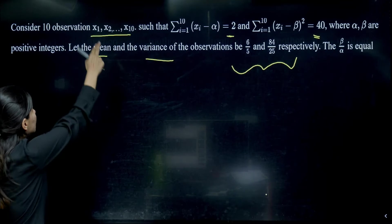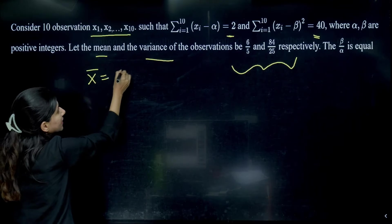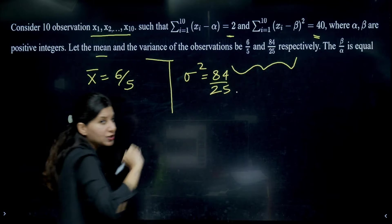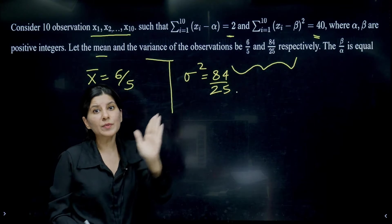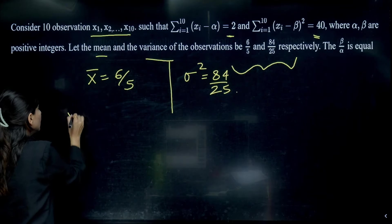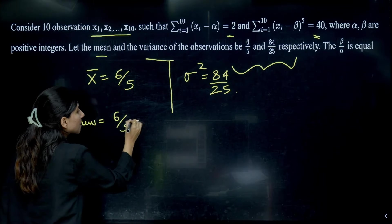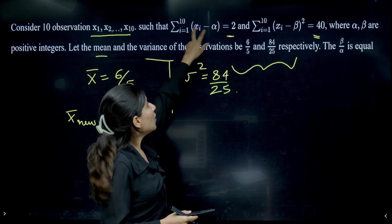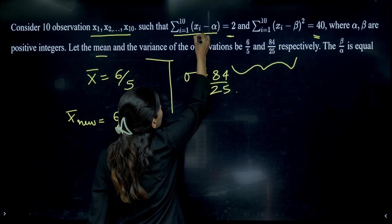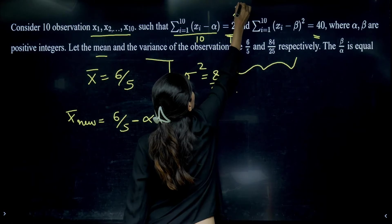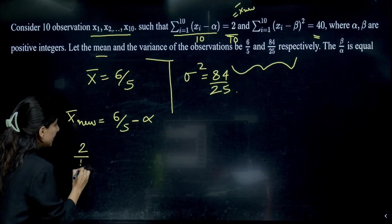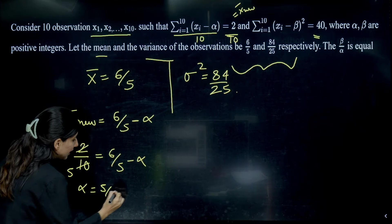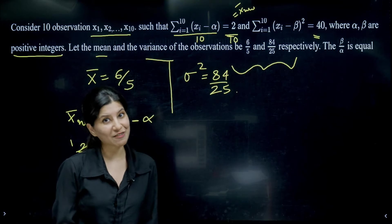Now applying this: 10 observations, original mean x-bar = 6/5, original variance = 84/25. They subtract alpha from each observation. The new mean equals 6/5 − alpha. But we can also compute new mean as sum/(number of observations) = 2/10 = 1/5. So 1/5 = 6/5 − alpha, giving alpha = 5/5 = 1. Since alpha and beta are positive integers, alpha = 1 is confirmed.